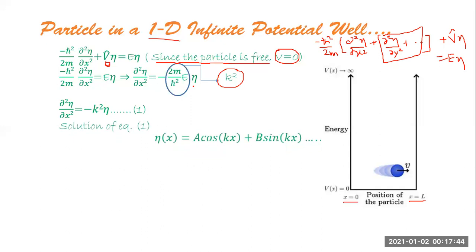The solution to this differential equation is η(x) = A·cos(kx) + B·sin(kx). You can verify this by substituting back into the equation. A and B are unknown constants of integration which we can find using the boundary conditions.